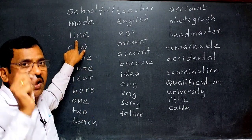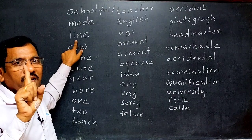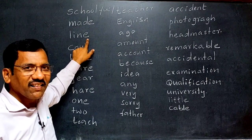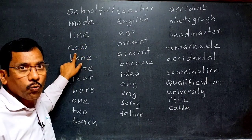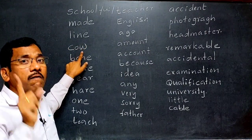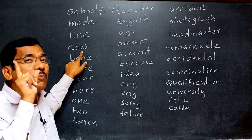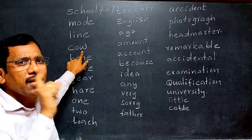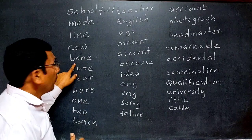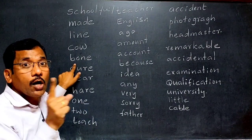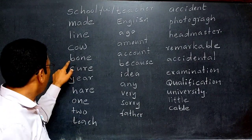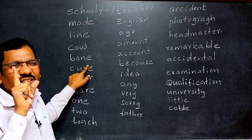The word 'line' — it has the diphthong 'AI,' which is one vowel sound, so it is a word of one syllable. 'Bow' — 'AU' is a diphthong, one vowel sound, so 'bow' is a word of one syllable. 'Bone' — 'AU' is a diphthong, so 'bone' is also one syllable. 'Cure' — 'UA' is one diphthong, so 'cure' is one syllable.